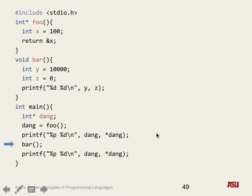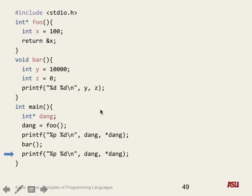So in a normal world, those two prints of 'dangling' should output the same thing, right? Looking at bar, it doesn't change any global variables, and 'dangling' itself is not global. So we have two identical print lines with a function in between that doesn't change any global state — they should output the exact same thing.